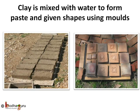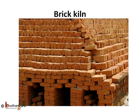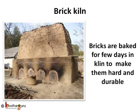The clay is mixed with ash and water to make a paste. For bricks, the paste is put into rectangular wooden molds to get the shape of the brick. Different molds are used to make different shapes of tiles. It is then left to dry in the sun for two days. The dried bricks are arranged in many rows, one above another.